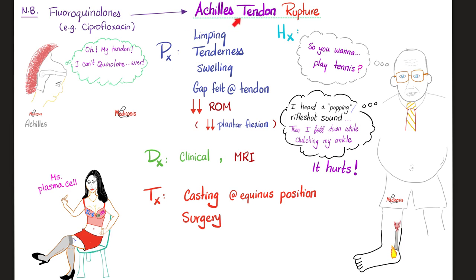Let's talk about the history of a patient with Achilles tendon rupture. It's the classic story of an old, morbidly obese, out-of-shape male who has not exercised in years and is trying to impress a young lady in a tennis game. While playing intensely, he heard a popping sound, then fell down while clutching his ankle in pain — that is an Achilles tendon rupture. On physical exam, the patient cannot walk and is limping. The area is very tender and swollen, and there is a gap where the tendon used to be.